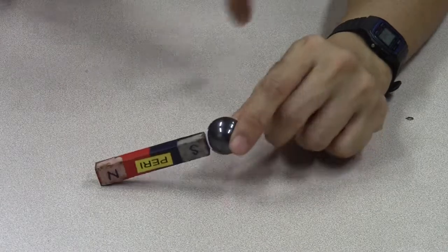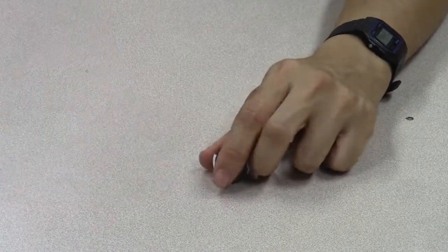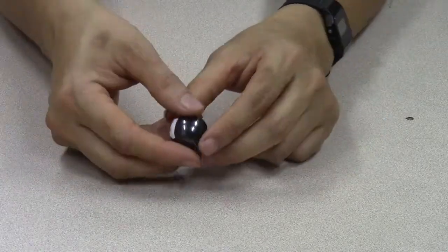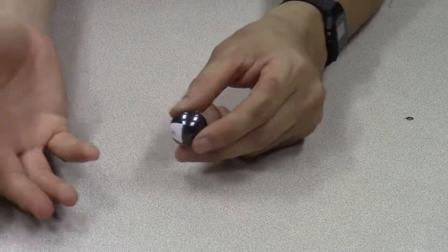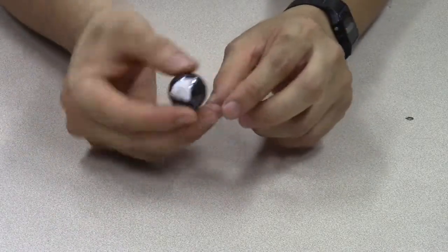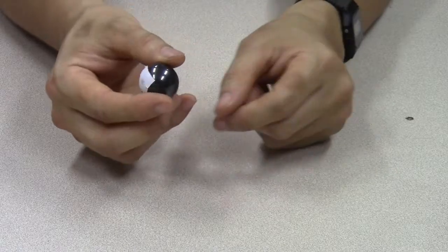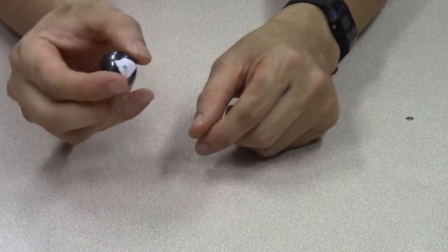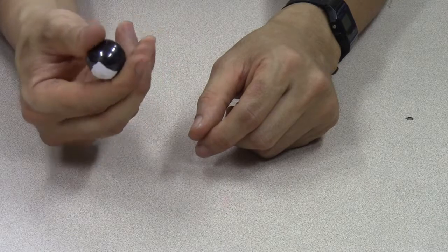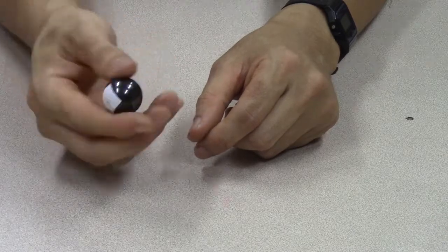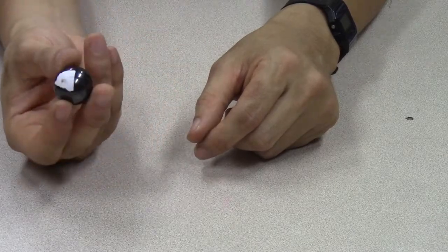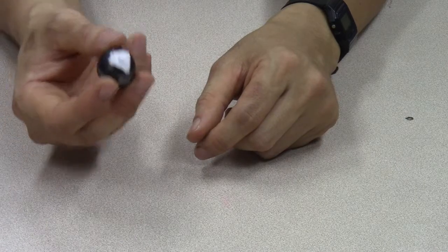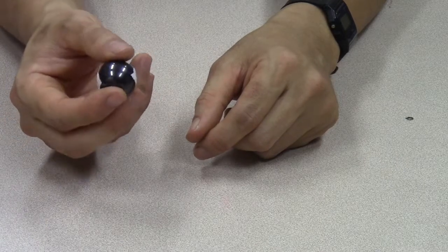That's another method of finding which is north and which is south. But what happens if you don't have a compass and you don't have a bar magnet for which you know the orientation of the poles? How do you find out which pole of this ball magnet is north and which side of it is south? For that, we have to look at a map.